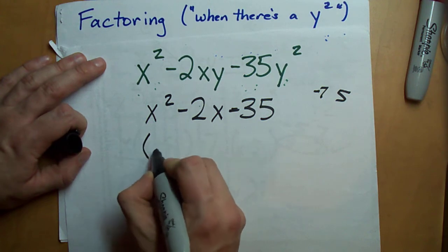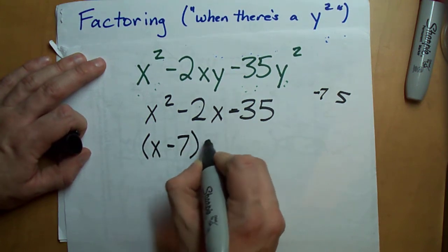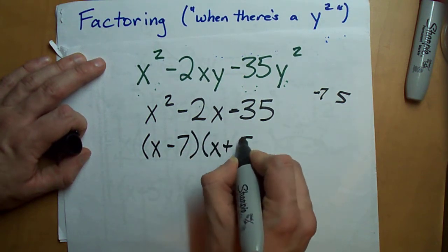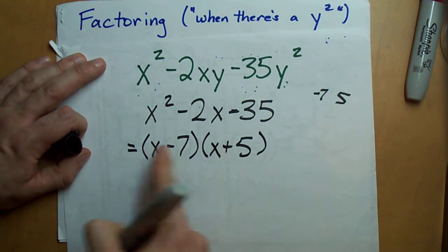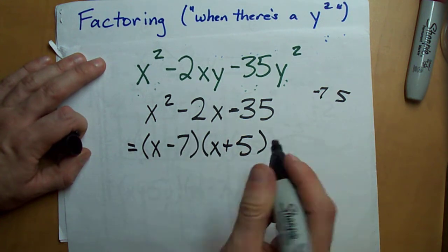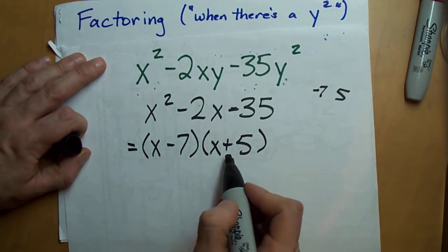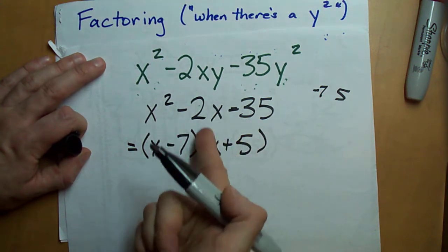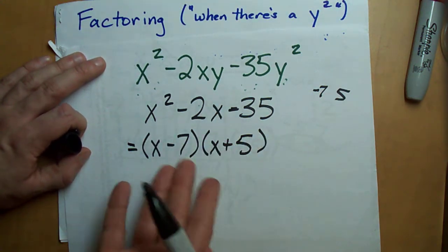Once you get there though, you're gonna be able to plug them in to this kind of expression pretty quickly. x minus 7 times x plus 5. That's the factored form of this. That's why it's called the easy case. Isn't that easy?